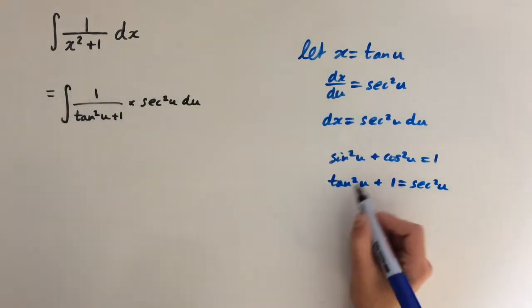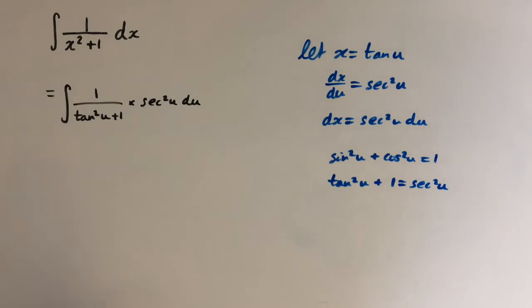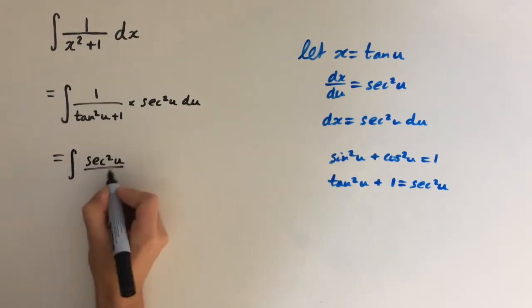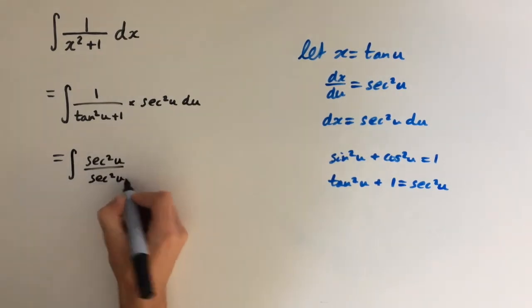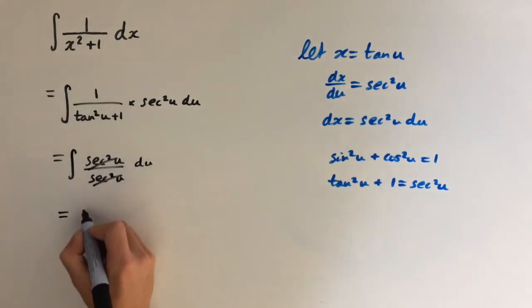And you notice that this equals the left hand side of this identity, so we're going to sub this in. And this is going to give us integral of sec squared of u over sec squared of u du. So these are going to cancel out and we're going to get integral of 1 du.